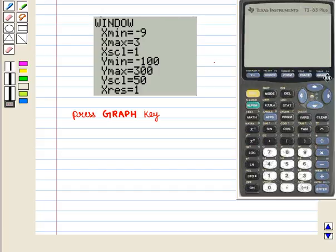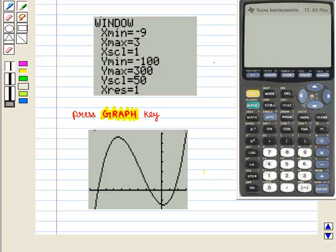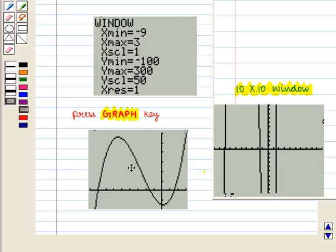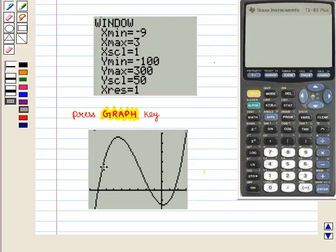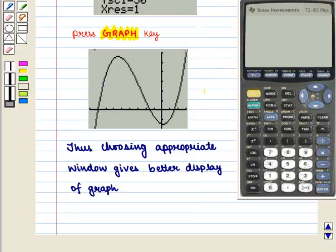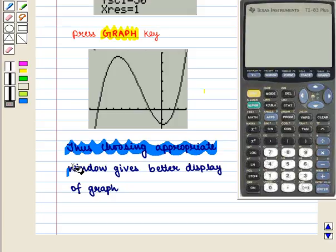Now we press graph key. We get this display of the graph on the screen. Now this window is better than 10 by 10 window display. Now using this window we are getting a clear idea of the graph. Thus choosing appropriate window gives better display of graph.